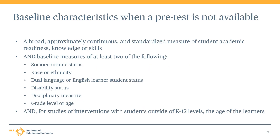In some scenarios, a direct pretest may not be available — perhaps it was not reported by the study authors, or it is not applicable for a given outcome, such as high school completion. If a pretest is not available, the baseline equivalence standard can still be satisfied using a broad, approximately continuous, and standardized baseline measure of student academic readiness, knowledge, or skills from one of the following domains: cognition, academic achievement, general literacy achievement, general mathematics achievement, or post-secondary academic achievement.